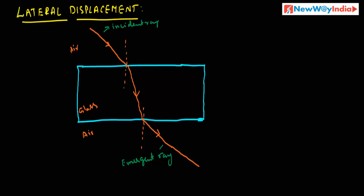If you extend the incident ray, it is almost parallel to the emergent ray. So what do you observe here? The extension of the incident ray is parallel to the emergent ray, but there is some distance between them.